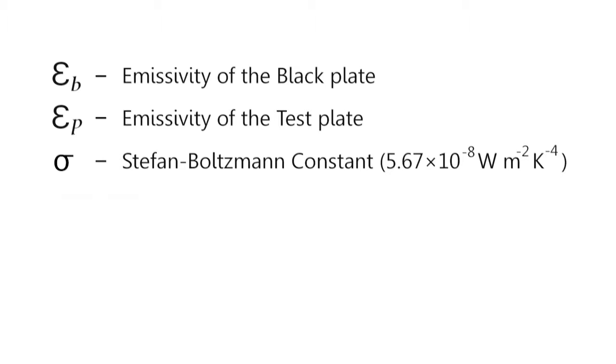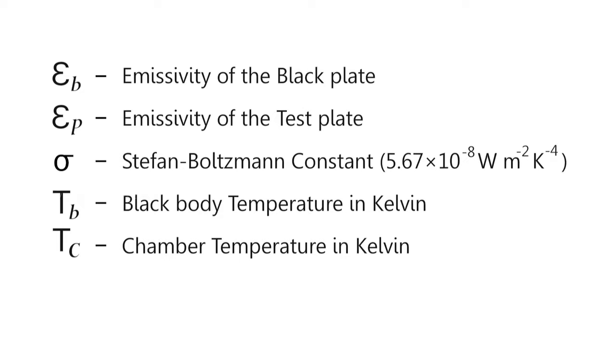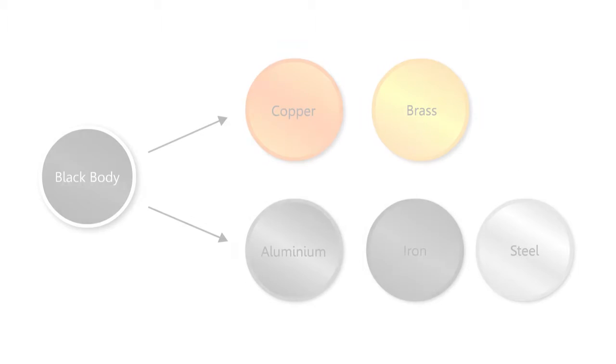Tb is black body temperature in Kelvin, Tc is the chamber temperature in Kelvin, Tp is test plate temperature in Kelvin.